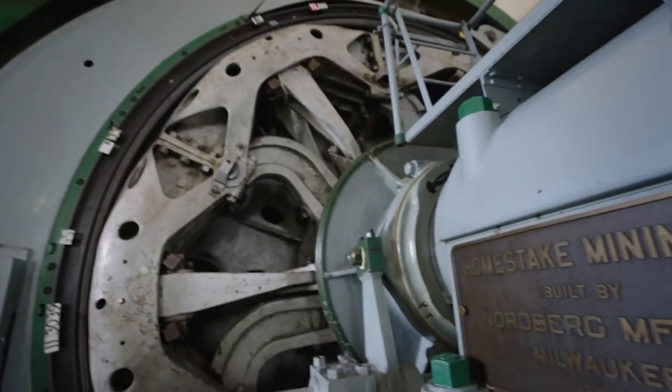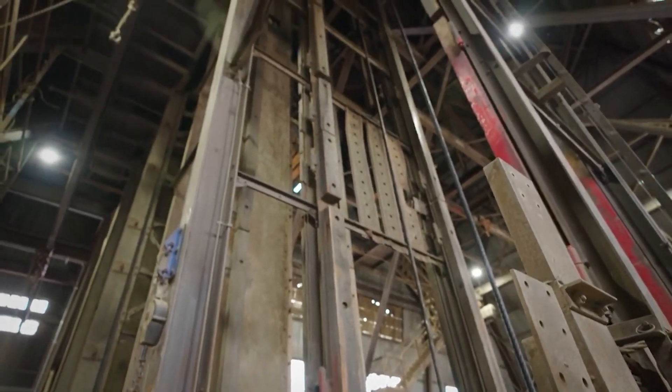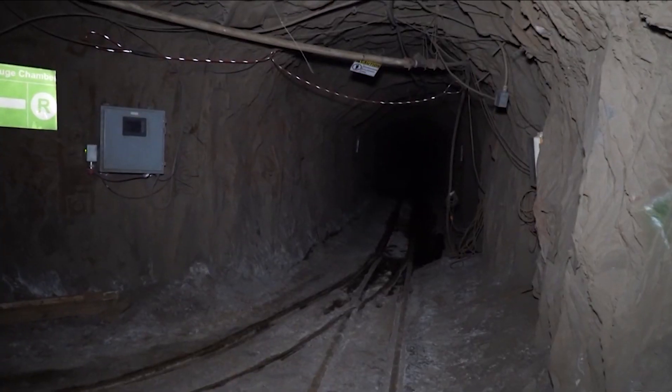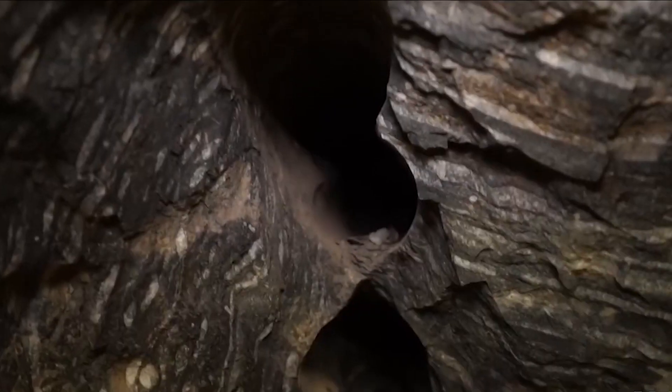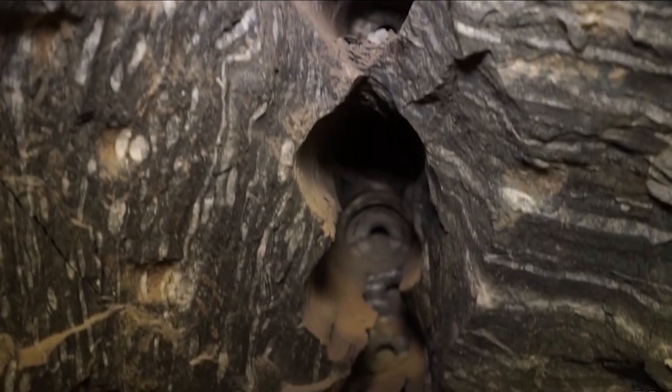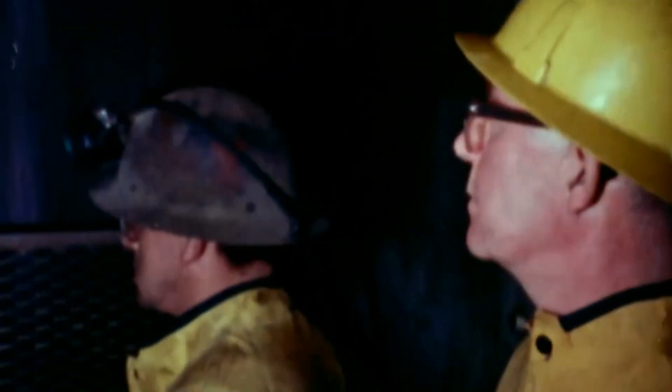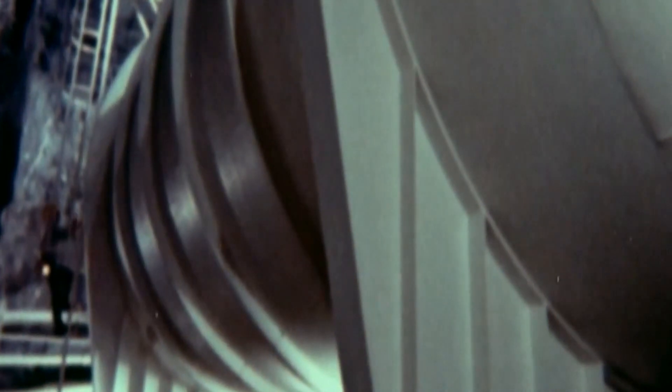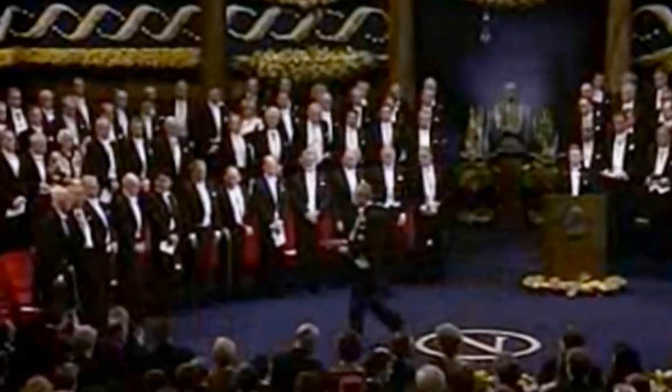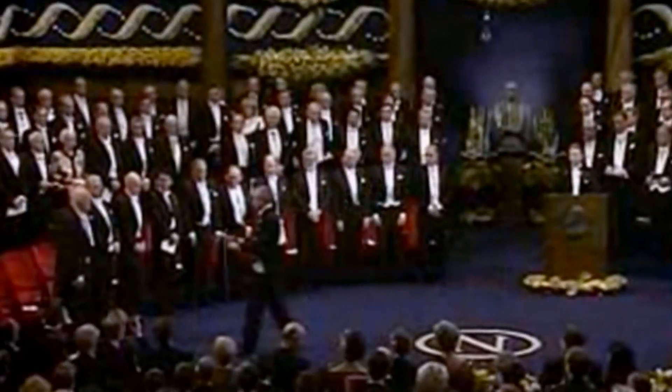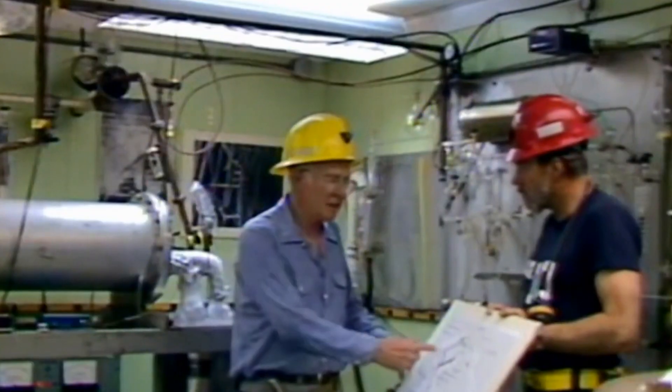But there's more to this underground site than its practical advantages. It's steeped in scientific history. The former Homestake Gold Mine was once home to pioneering neutrino experiments in the 1960s. Here, physicist Ray Davis achieved a groundbreaking milestone, detecting solar neutrinos for the first time using a massive tank filled with cleaning fluid. His work earned him the Nobel Prize in Physics in 2002 and laid the foundation for modern neutrino science.